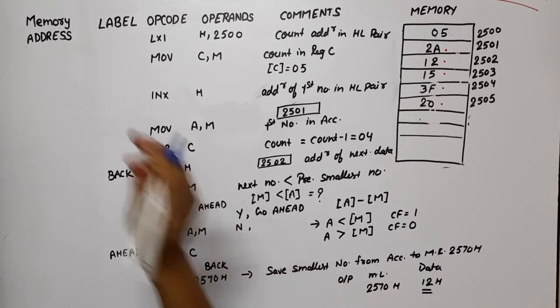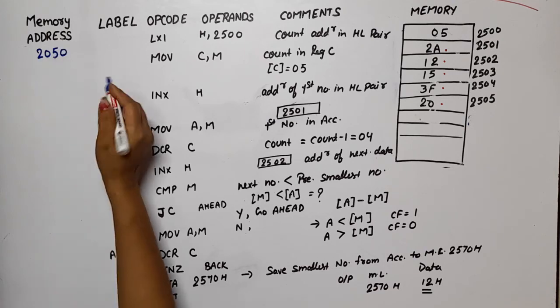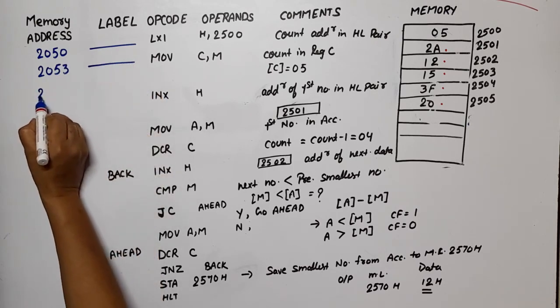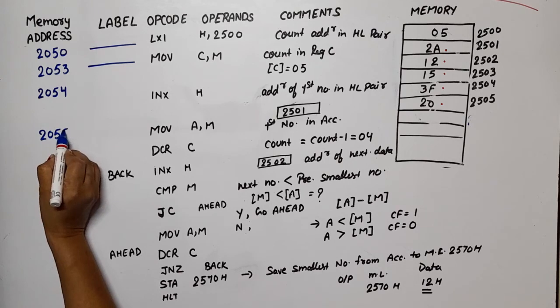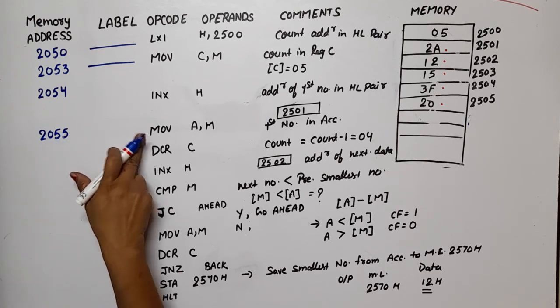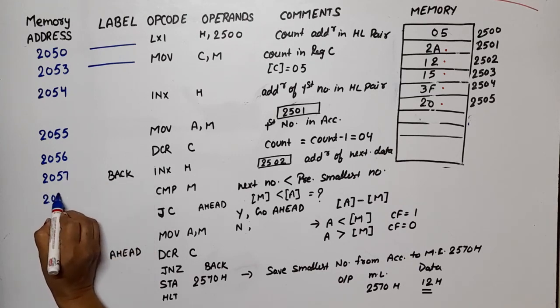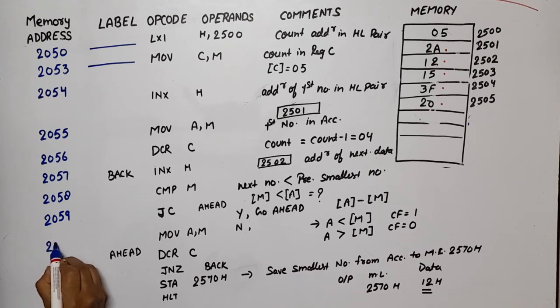Now I'll show you the memory locations. Suppose I start this program at 2050. LXI is a three-byte instruction, so the next instruction will be at 2053. MOV is one byte, so next instruction is at 2054. This is one byte, so next at 2055. MOV is one byte, so DCR is at 2056. DCR is one byte, so INX H is at 2057. This is one byte, so CMP M is at 2058. Again one byte, so next is 2059.